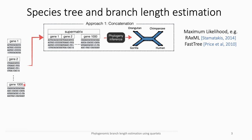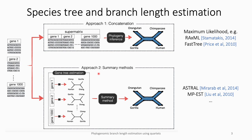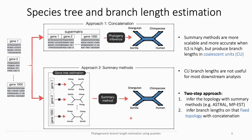A traditional approach for estimating species trees is to concatenate all gene sequence alignments into a superalignment and then give the superalignment to phylogenetic inference methods such as maximum likelihood to infer the species tree. An inherent assumption in this approach is that all gene alignments evolved on a single tree, which is not true when we have gene tree discordance. A second class of methods that have become popular in recent years are summary methods, such as ASTRAL, which first estimate an individual gene tree for each gene alignment and then combine these gene trees into the species tree.